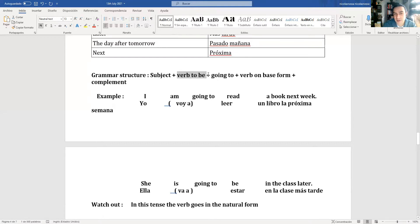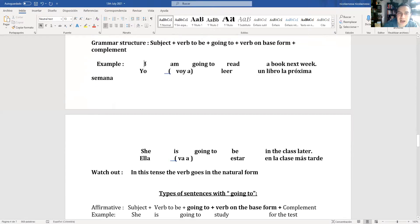Let's check the grammar structure. Subject, always here the verb to be appears with its conjugation in present, going to, the verb in its base form, complement. Example: I am going to read a book next week.